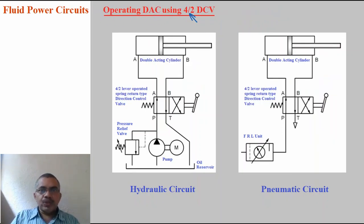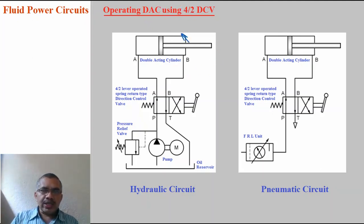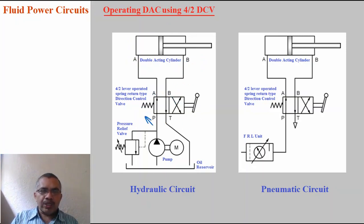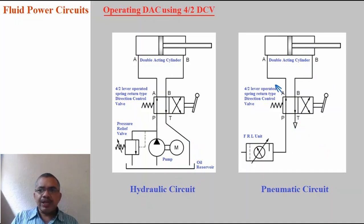Operating a double acting cylinder using a 4 by 2 valve. To operate double acting cylinders, we use a 4 by 2 valve or 5 by 2 valve. The double acting cylinder has two ports: port A and port B. The 4 by 2 valve has four ports: pump port P, cylinder port A, cylinder port B, and tank port T. Tank port T is connected to the reservoir in hydraulic circuits. In pneumatic circuits it is open to atmosphere, since compressed air can be exhausted to atmosphere, whereas oil must be returned to the tank.